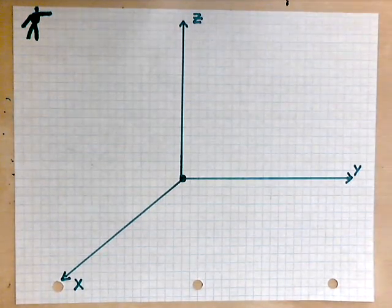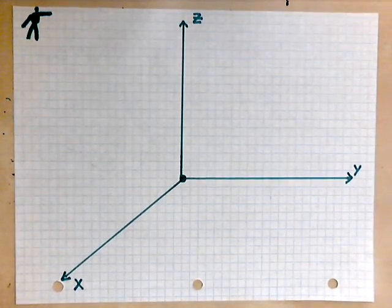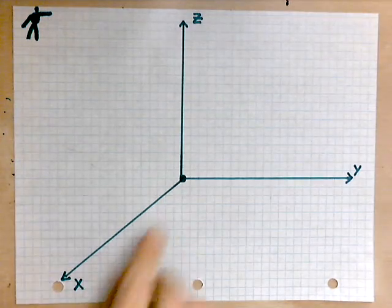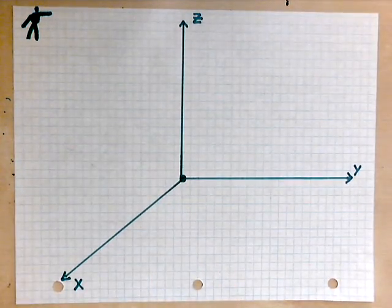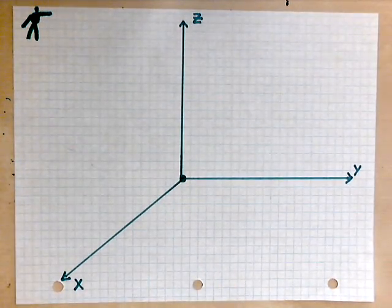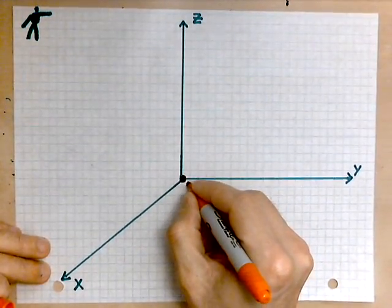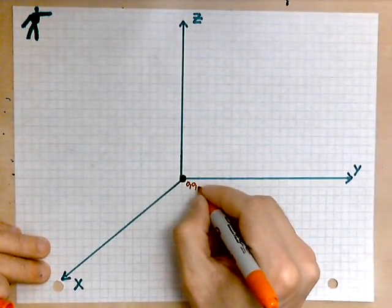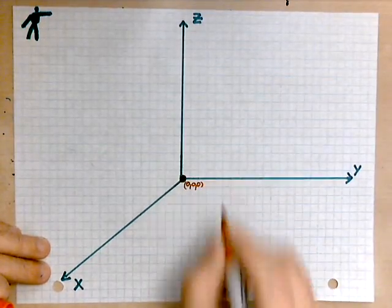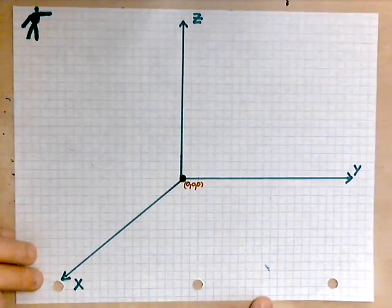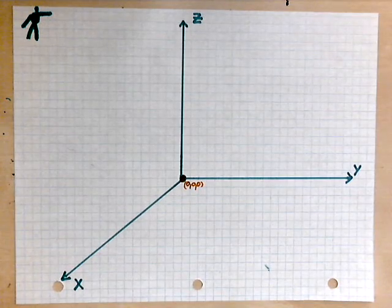And remember, the purpose is to be able to locate objects within the system. The point in the middle is the origin. And its coordinates are, of course, zero, zero, and zero. Each of x, y, and z is zero.